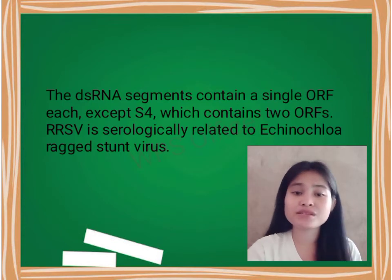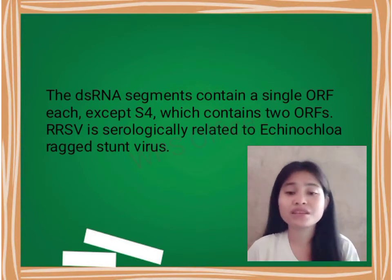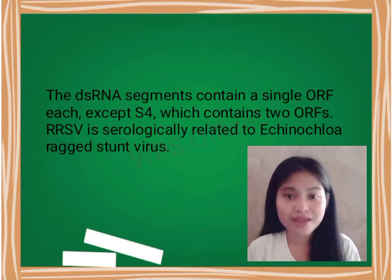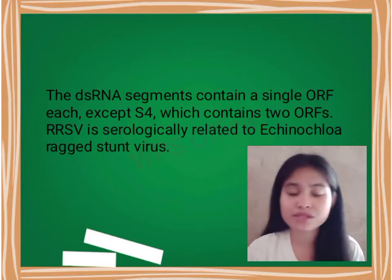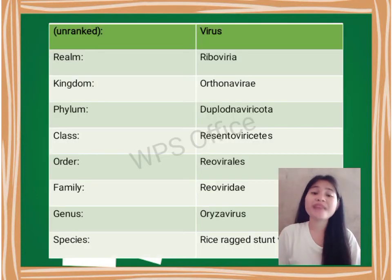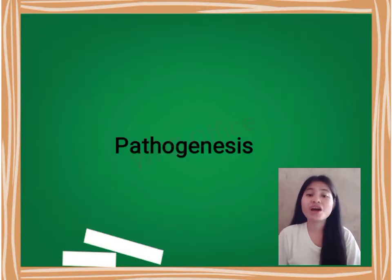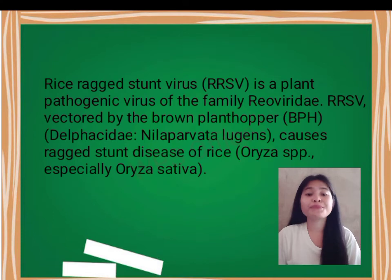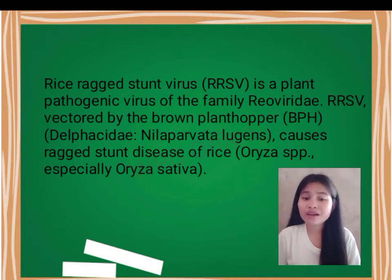Rice Ragged Stunt Virus is serologically related to Echinochloa Ragged Stunt Virus. Rice Ragged Stunt Virus is a plant pathogenic virus of the family Reoviridae. RRSV is vectored by the brown planthopper and causes ragged stunt disease of rice.